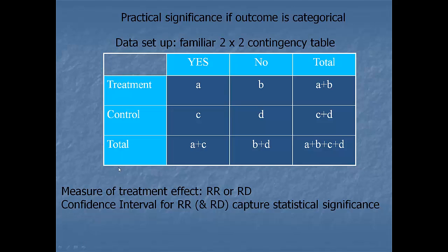Practical significance. If outcome is categorical, you've seen this already. So relative risk is one. Risk difference is another. That's if the outcome is categorical.